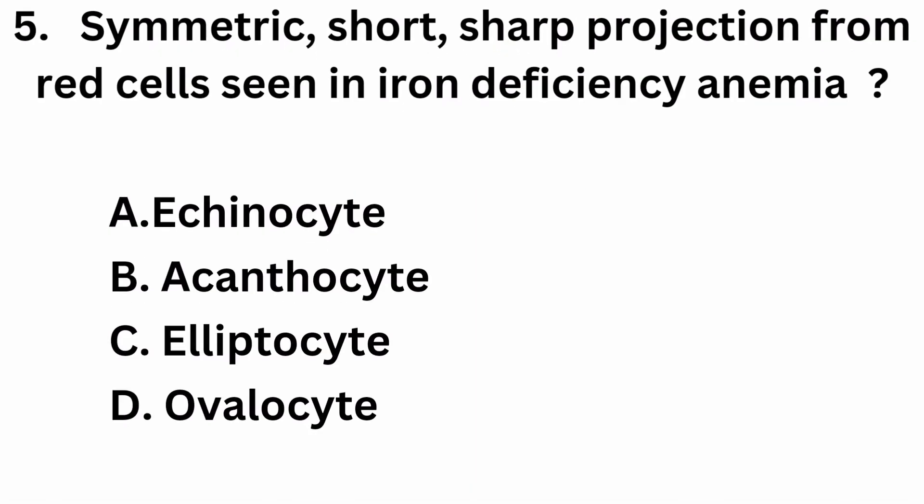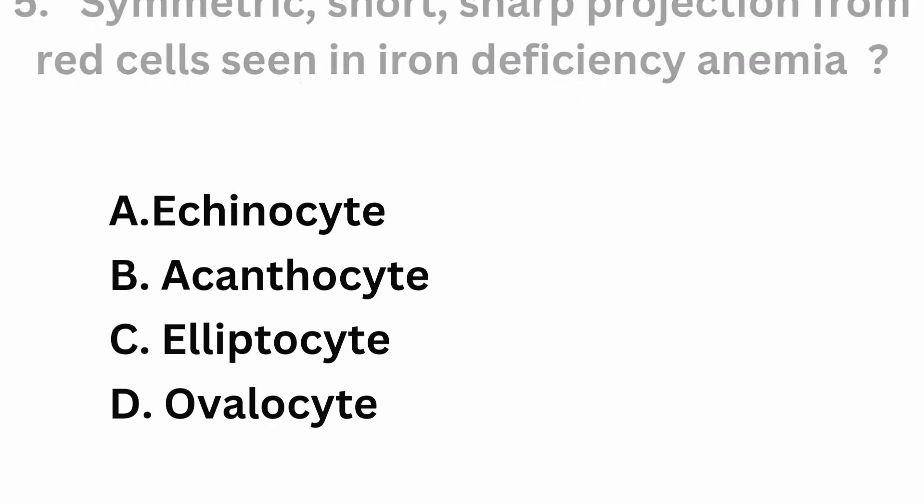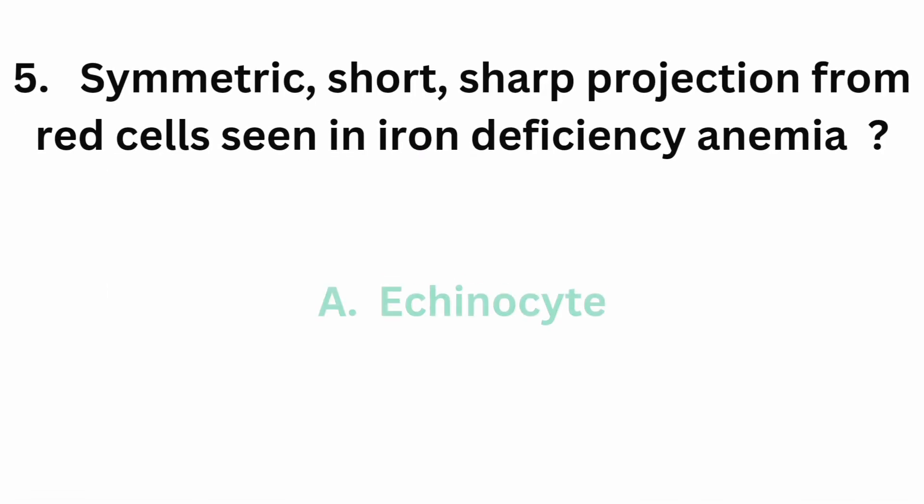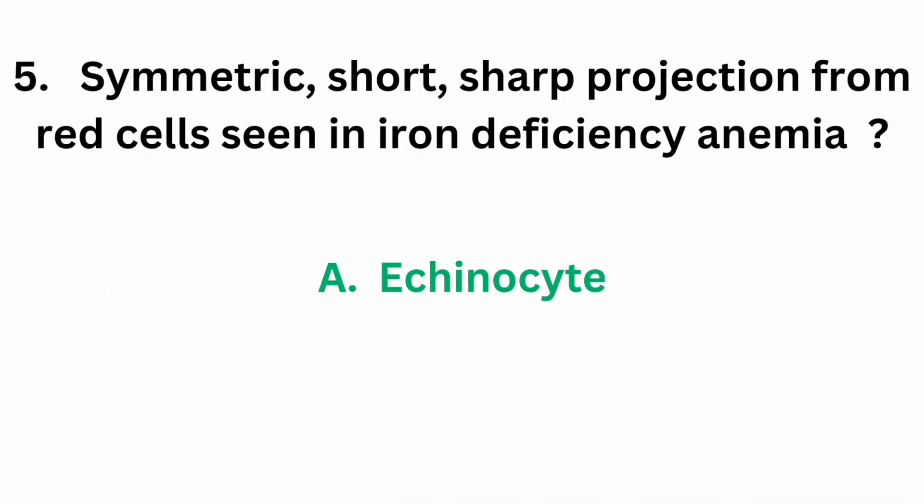Question number 5: symmetric, short, sharp projection from red cells, seen in iron deficiency anemia. Option A, echinocyte. Option B, acanthocyte. Option C, elliptocyte. Option D, ovalocyte. The correct answer is option A, echinocyte.